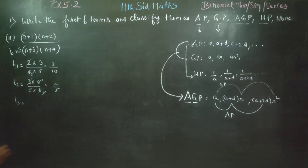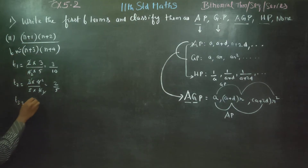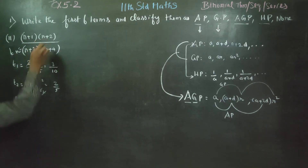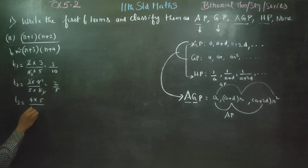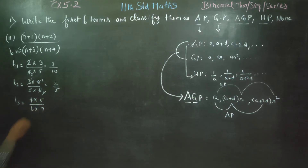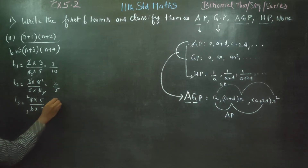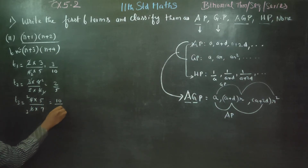Now t3. Substituting n=3: (3+1)(3+2)(3+3)(3+4) = 4 × 5 × 6 × 7. It is 2 times cancelled, 3 times cancelled. Then the answer is 10 by 21.